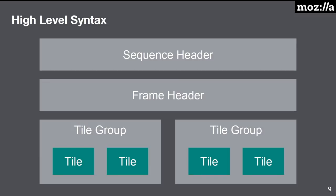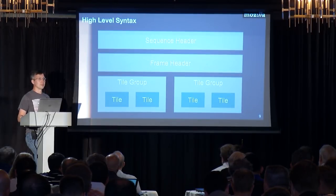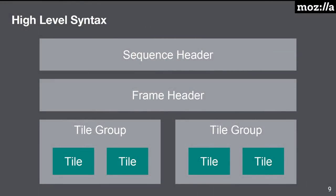We added a high-level syntax to AV1. VP9 had frames that you'd put into containers, but when super frames were added that contained other frames, that became complicated. So we created this high-level syntax: sequence headers that start a video stream, frame headers at the beginning of a frame, and the notion of tile groups. Tile groups can be sent and decoded independently. In a real-time setting with packet loss, if you lose a tile group, you can do error concealment and continue decoding without desyncing. Inside the tile group, we have tiles, which are independently or parallelizably decodable, helping with performance.